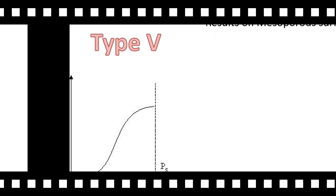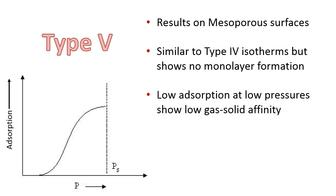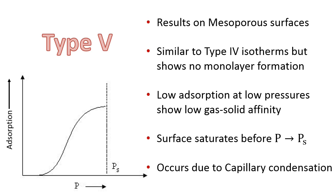Type 5 isotherms also occur on mesoporous surfaces. They are similar to type 4 except that there is no monolayer formation. Low adsorption and low pressure indicates low gas-solid affinity. The surface saturates before pre-saturation and occurs due to capillary condensation.